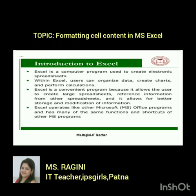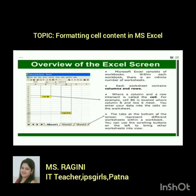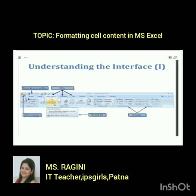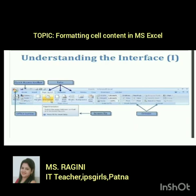Here is the screen of MS Excel. In this screen, columns are labeled A, B, C, D and rows are labeled 1, 2, 3, 4. The intersection of a row and a column is called a cell. Understanding the interface — the first element is the Office Button, and the second is the Quick Access Toolbar.